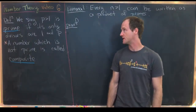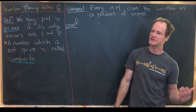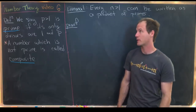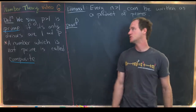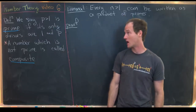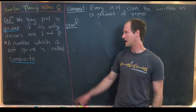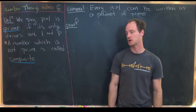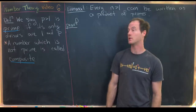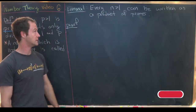This is the sixth in a series of videos supporting a course in number theory. We just finished talking about GCDs and the Euclidean algorithm, and now we're ready to talk about prime numbers. We say p, which is bigger than 1 and a natural number, is prime if its only divisors are 1 and p. A number which is not prime is called composite. Today we want to work up towards the fundamental theorem of arithmetic, starting with the following lemma.